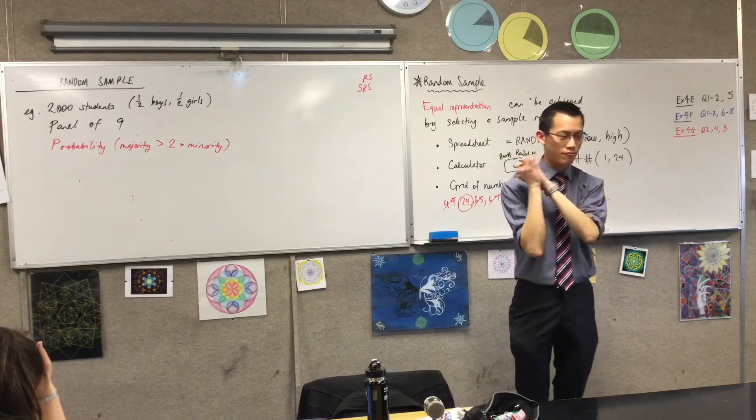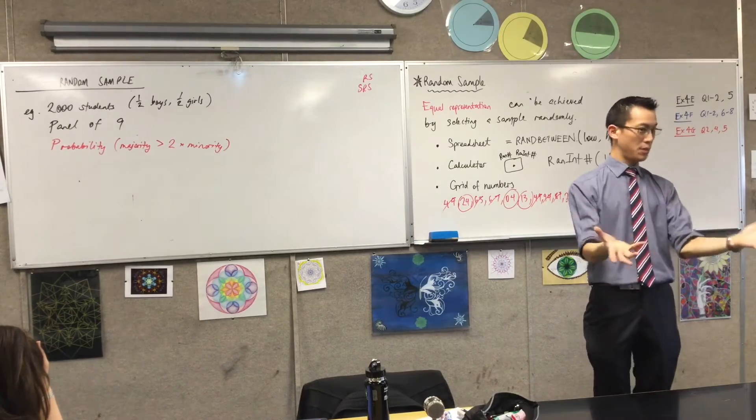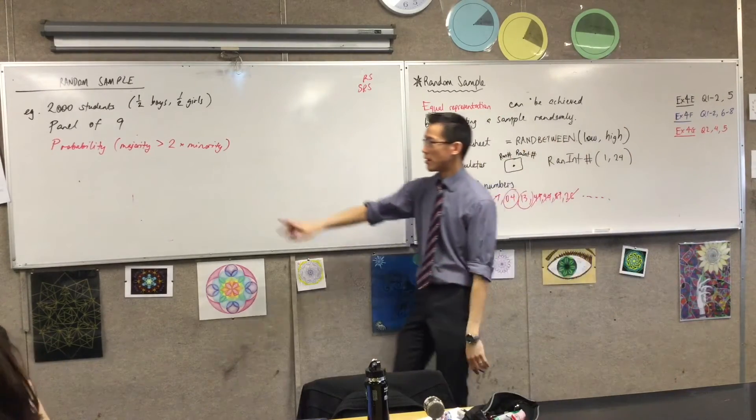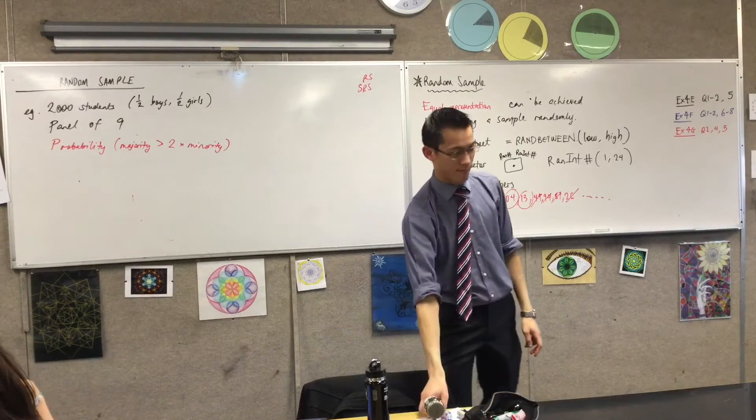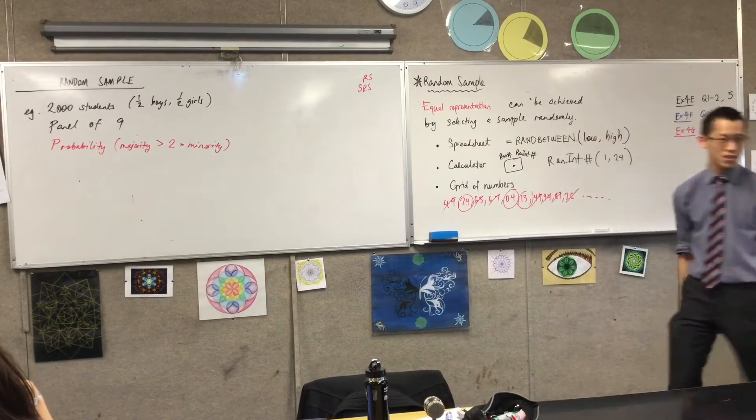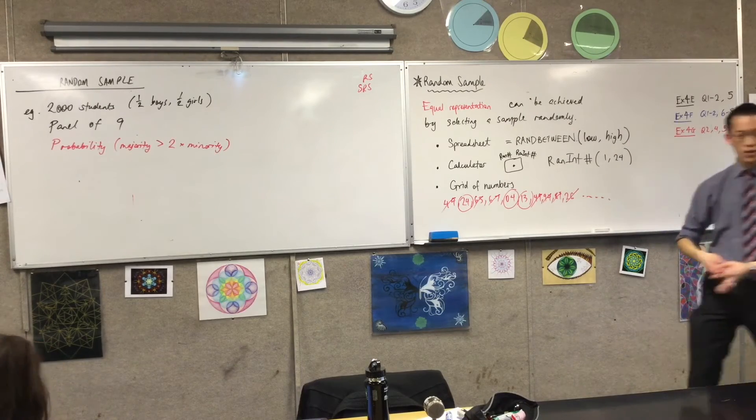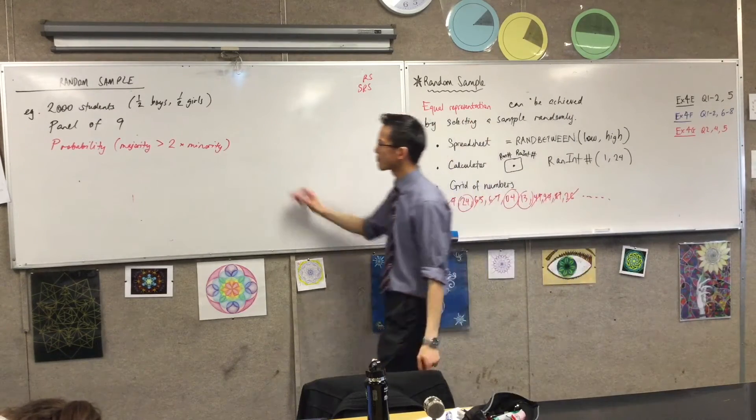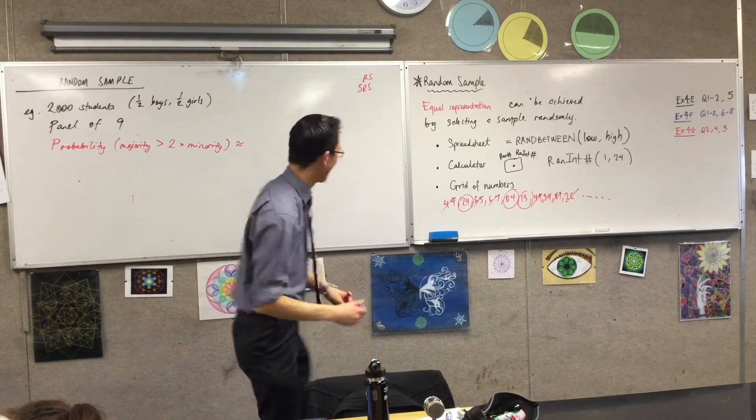So here's what I want you to do. Think. I'll give you about 15-20 seconds. Scale of 0 to 100. How likely, as a percentage, do you think it is that this will actually be the case? Just think about it for a moment. Equal number of boys, equal number of girls.